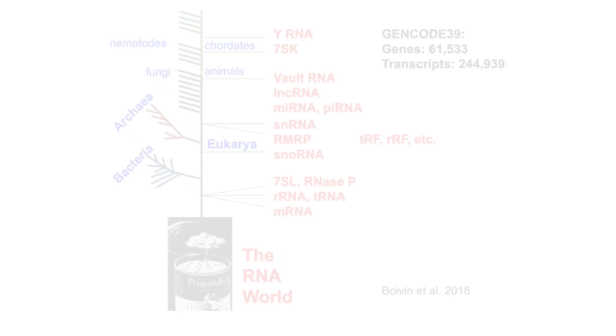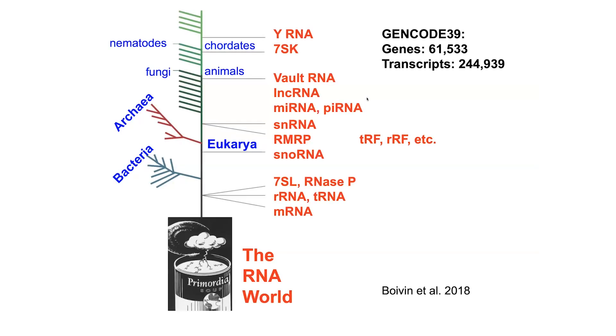Our cells contain a large number of non-coding RNAs and coding RNAs. In the current annotation of the human genome, we have more than 60,000 genes and more than 200,000 transcripts.